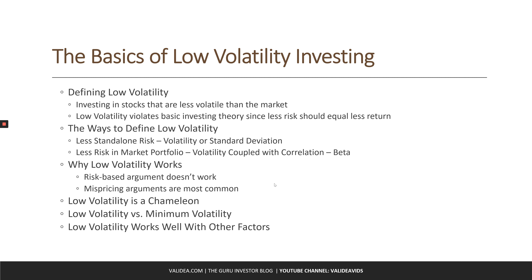It is also difficult to explain why investors would systematically underprice low volatility stocks, but the most common explanation is a behavioral one. Investors who can't use leverage bid up the prices of high beta stocks beyond their fundamentals. This leaves those stocks overpriced relative to low volatility stocks, and low volatility investors take advantage when the mispricing is corrected.